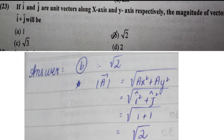Next question: if i and j are unit vectors along the x-axis and y-axis respectively, the magnitude of i plus j is found using √(i² + j²). Since both are unit vectors with value 1, this becomes √(1 + 1) equals √2. So the answer is √2, which is option B.